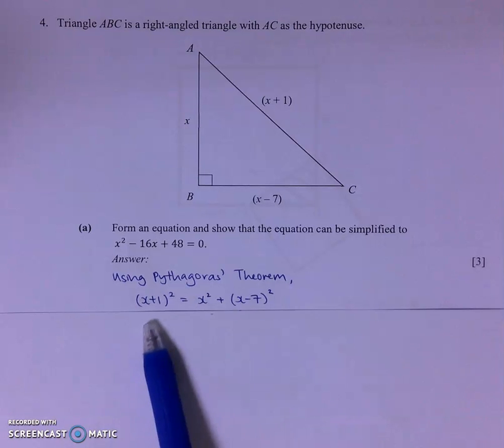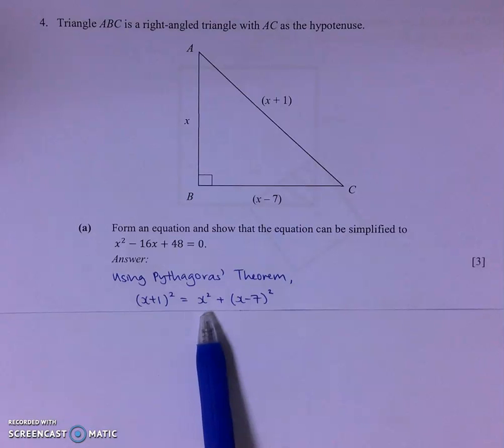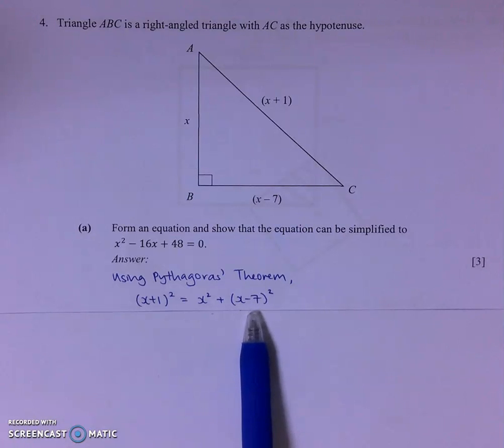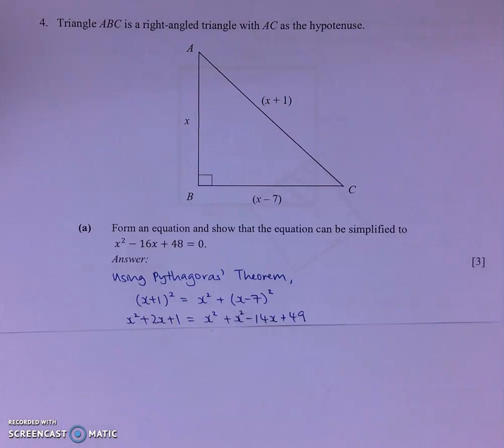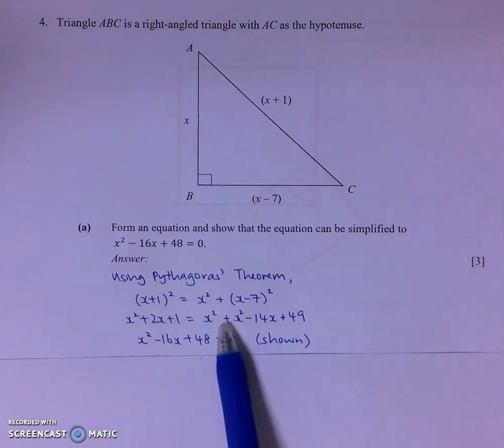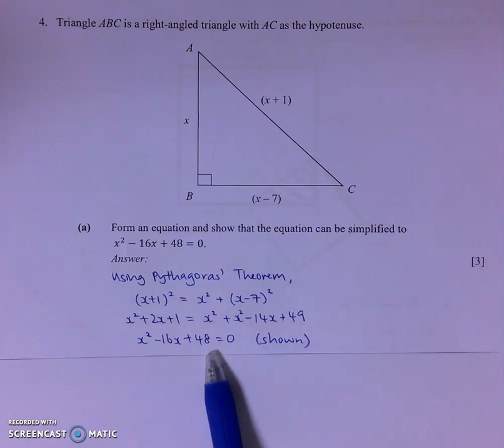So my hypotenuse, AC squared is equal to AB squared plus BC squared. So I put in the lengths, then I do my expansion. And finally, I do my simplification to show this equation.